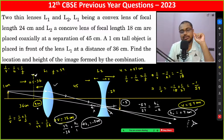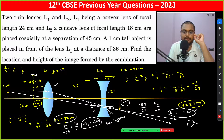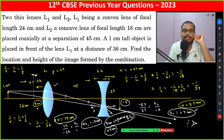Finally, the location of the image is 9 centimeters in front of L1, and the height of the final image is plus 4 centimeters.